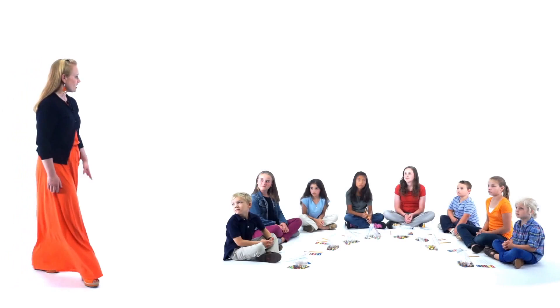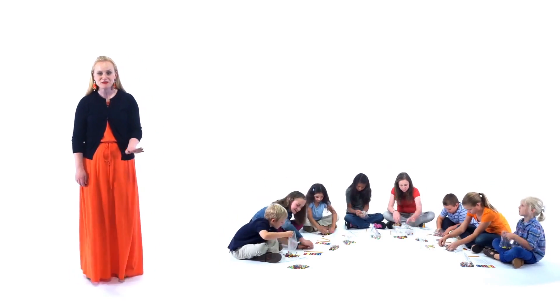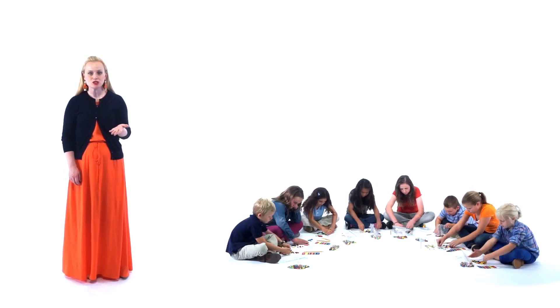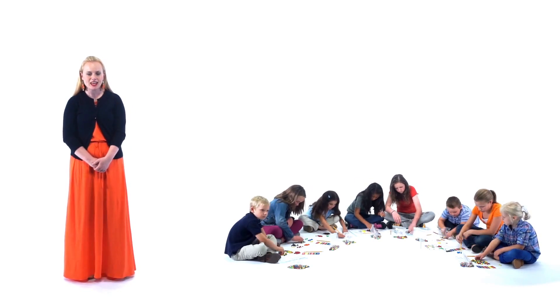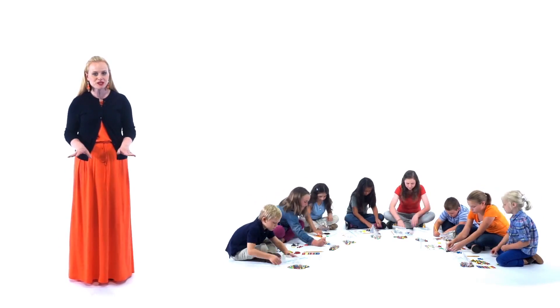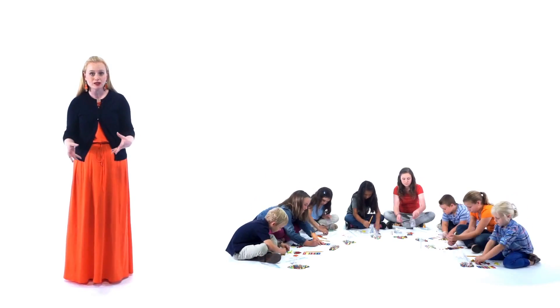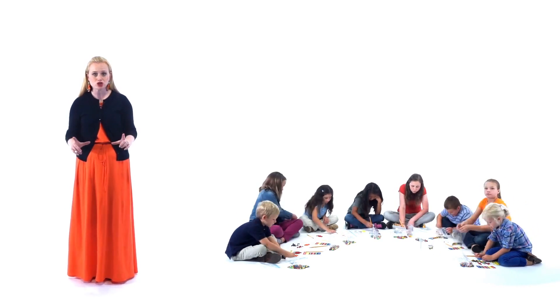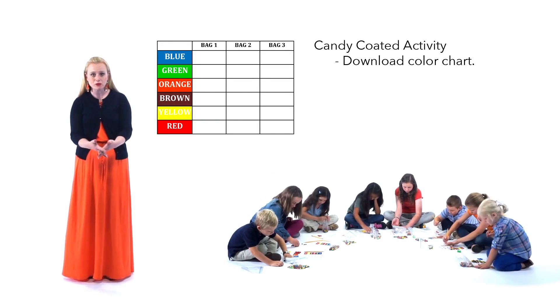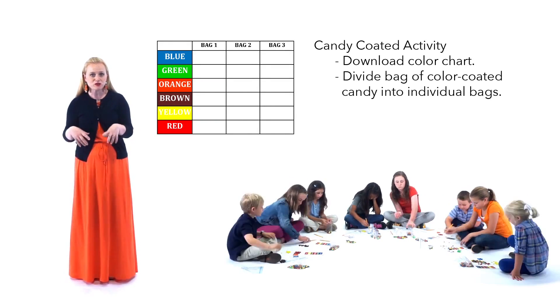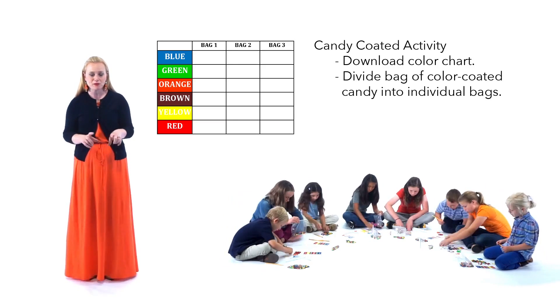If you want to participate in this experiment, you just need to go get your own three bags of your favorite candy-coated chocolate. Then what you do is, one bag at a time, we are going to do what the kids are going to do. This will be a fun experiment, and you get to eat all of the data when we're finished. They are taking one bag at a time, dumping them out, putting them in color-coded piles, counting how many of each color are in that one particular bag, and then writing their data into the color chart. You too can download that same color chart in PDF form, print it off, take an individual bag of your favorite color-coded chocolates, count them individually bag by bag, and enter your data as well.